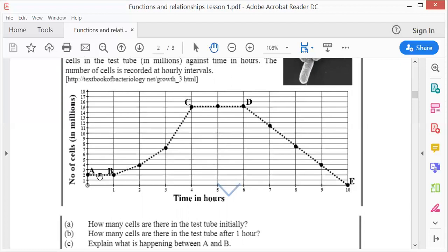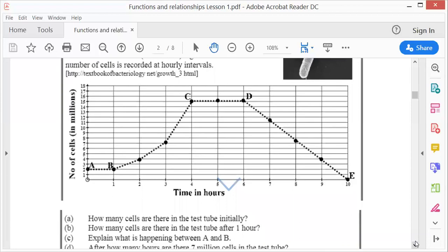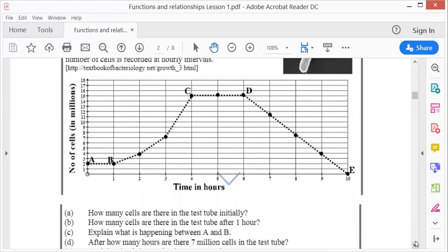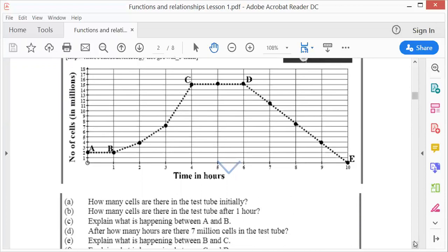After how many hours are there 7 million cells in the test tube? You go to 7 million, go across and down, and there you are: after 3 hours.